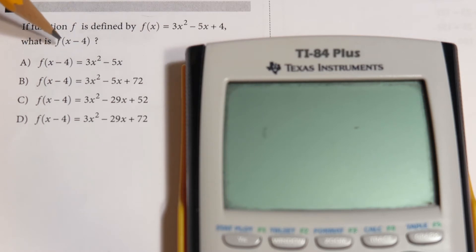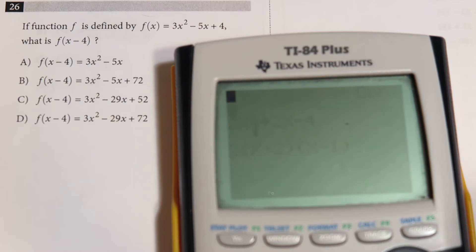They want you to do a transformation on it and shift it four units to the right, so x - 4. We're going to shift this function four units to the right, and they want us to come up with the new quadratic function that's been shifted in standard form. I was looking at this and said, okay, let's jump on this.